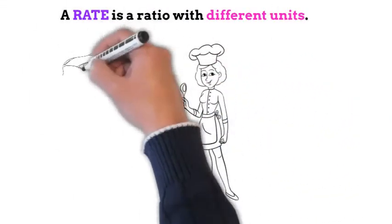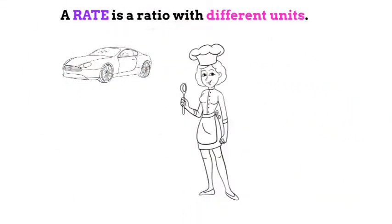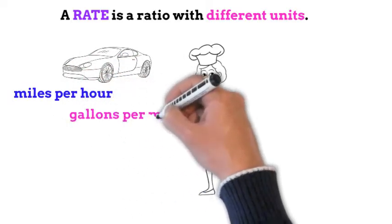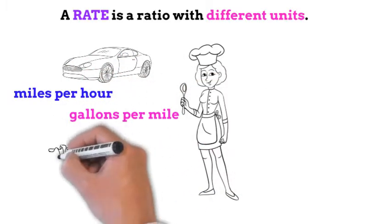A rate is just a ratio with different units. For example, speed can be measured in miles per hour. Gas mileage can be measured in gallons per mile.